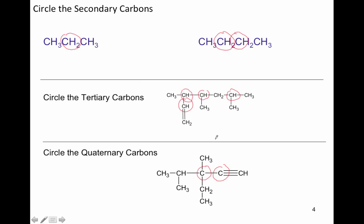Let's compare. The first example has one secondary carbon; the other two are primary. In the second structure, the second and third carbons are both secondary because each is bonded to two other carbons. For tertiary carbons, did you see four of them? This carbon here is tertiary because each bond counts individually — it has one bond going up and two going down. Quaternary carbons: this one has two.